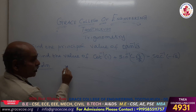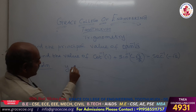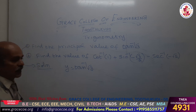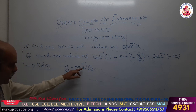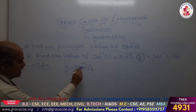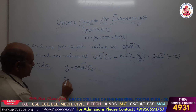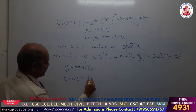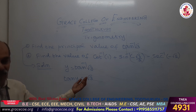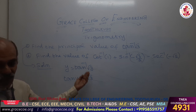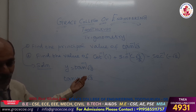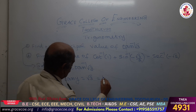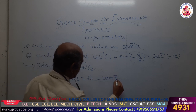Let us take y equal to tan inverse of root 3. So we can bring the tan inverse to the left hand side: tan y equal to root 3. What is the value for root 3? Root 3 is nothing but tan of pi by 3.